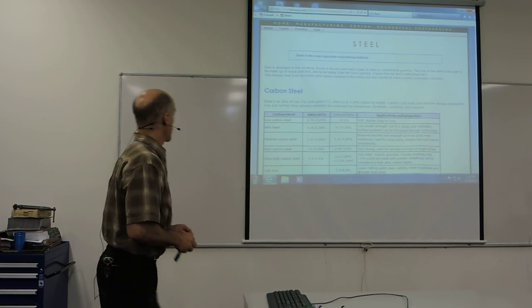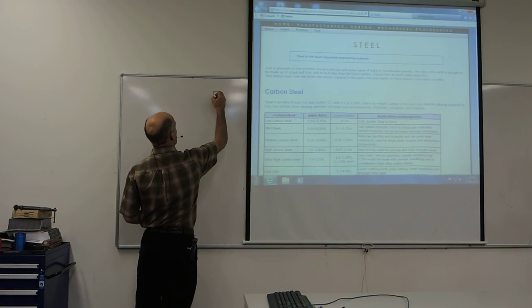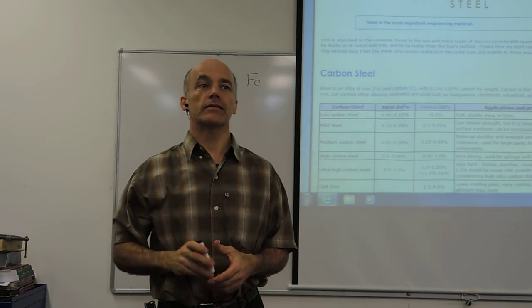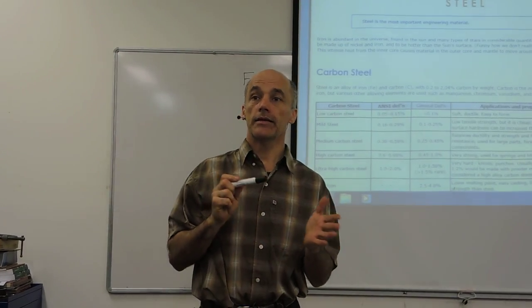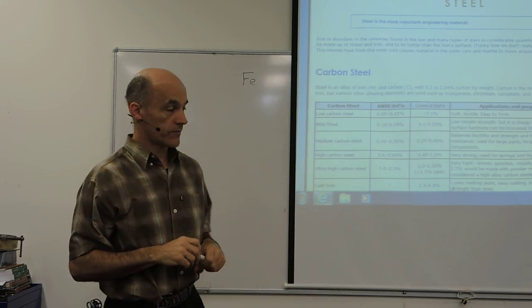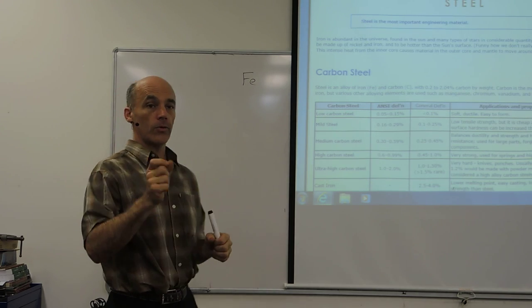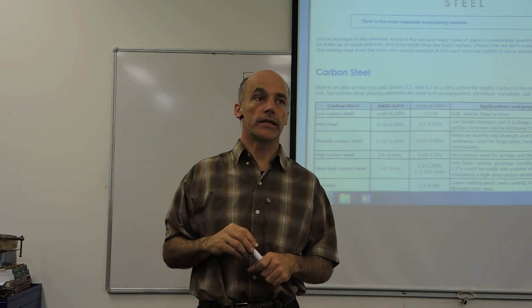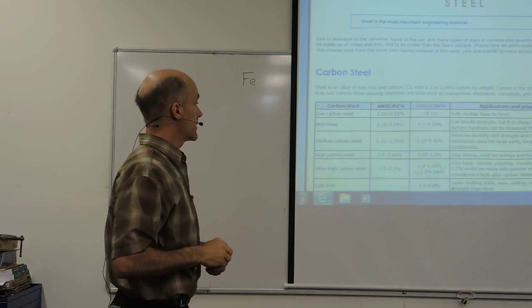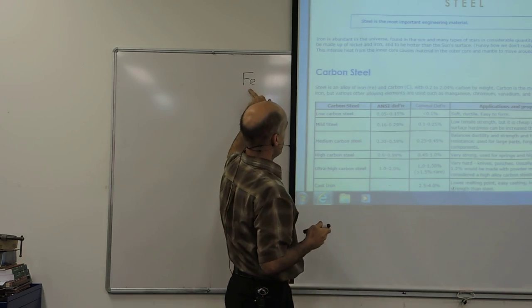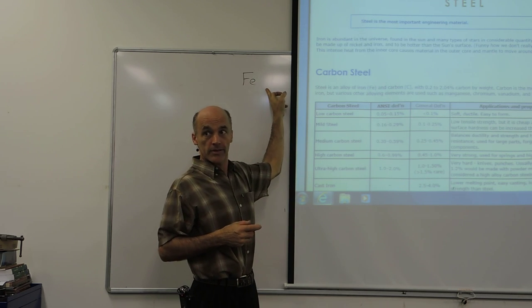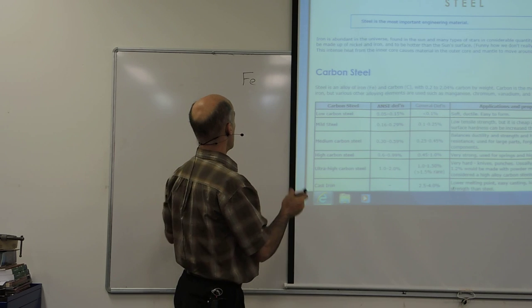Okay, iron, Fe, is a very important atom. It's the most important atom in engineering. And if we only had iron by itself, the material we would have is this heavy, soft stuff that you can make tire wire out of. That's almost pure iron. It's very ductile. It almost feels like copper, like a soft copper.